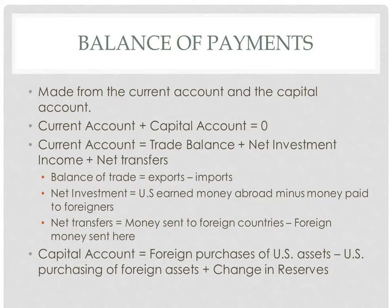The next topic is the balance of payments. The balance of payments is made up of the current account and the capital account, and the sum of these two accounts is always zero. The current account consists of the trade balance plus net investments plus net transfers. The trade balance is just net exports, or exports minus imports. Net investments is how much people in the U.S. make abroad subtracted from the money paid to foreigners. And net transfers is how much money the U.S. sends abroad minus the money sent here.